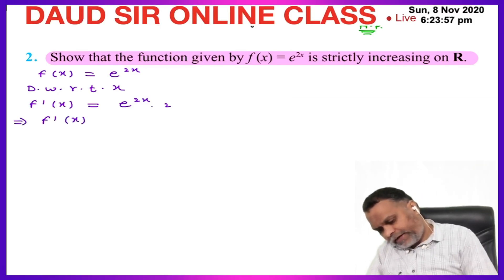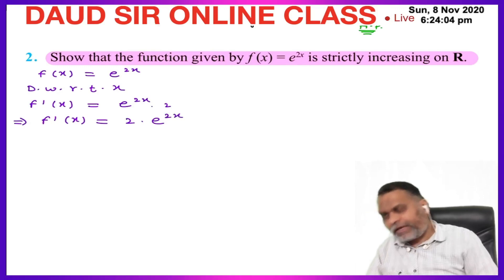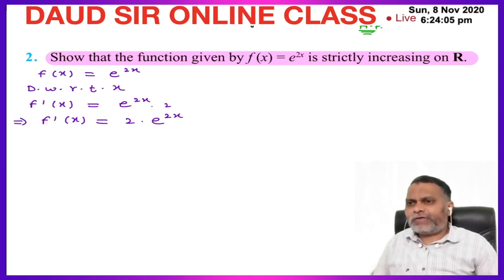So f'(x) is equal to 2 times e^(2x). This is the derivative.